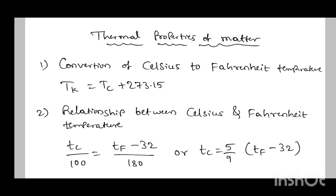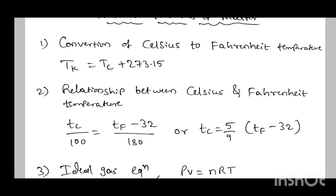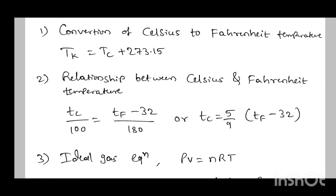Next is Thermal Properties of Matter. Important formulas for the annual exam: first, conversion of Celsius to Kelvin — temperature in Kelvin T_K equal to temperature in Celsius T_C plus 273.15. Next, the relationship between Celsius and Fahrenheit: T_C divided by 100 equal to T_F minus 32 divided by 180.